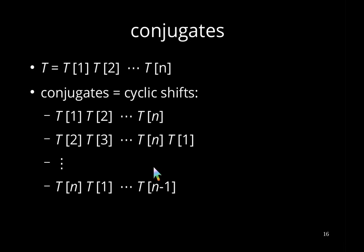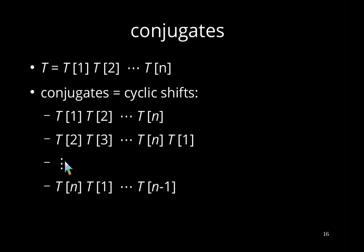Finally, we need conjugates. Given our text T with characters T1 to TN, conjugates are cyclic shifts: we take the first character and put it on the end, and repeat this until we get back our original string.